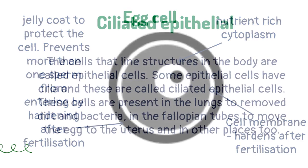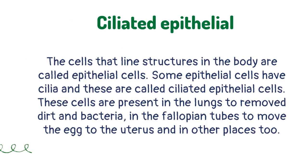The cells that line structures in the body are called epithelial cells. Some epithelial cells have cilia and these are called ciliated epithelial cells. These cells are present in the lungs to remove dirt and bacteria.